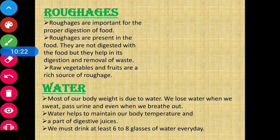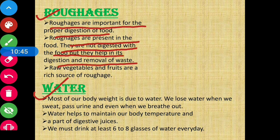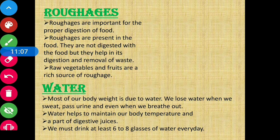There are two more nutrients present in our food: roughage and water. Roughage is important for proper digestion of food. Roughage is present in the food but it is not digested itself; however, it helps in digestion and removal of waste. Raw vegetables and fruits are rich sources of roughage.